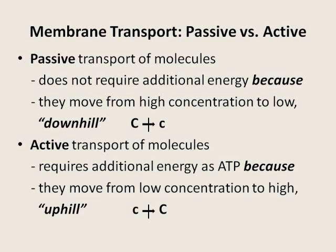Sometimes molecules need to go from low concentration areas to high concentration areas — uphill, if you will — and additional energy is required to do so. What can provide it? It is the high energy compound ATP, mostly produced by mitochondria. Example: the sodium-potassium pump, which we will discuss later in the course.